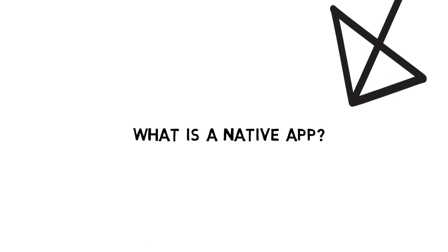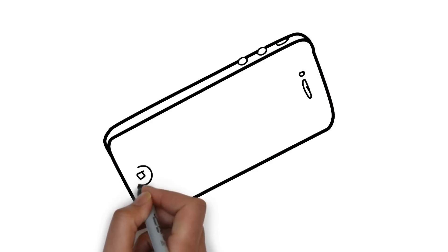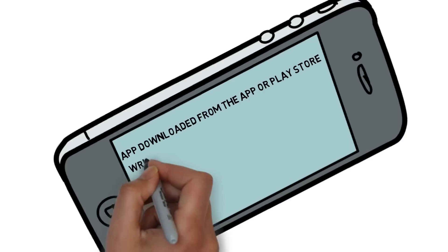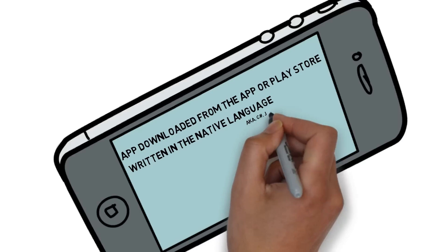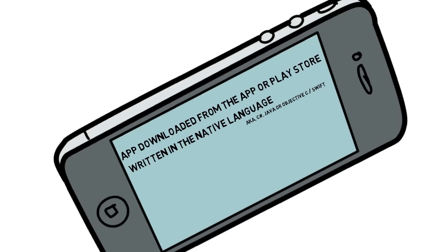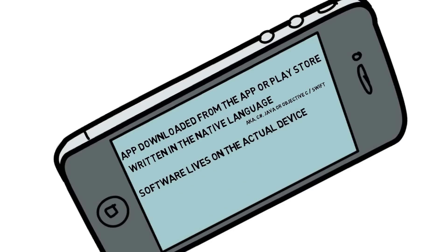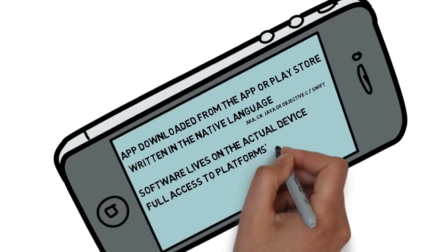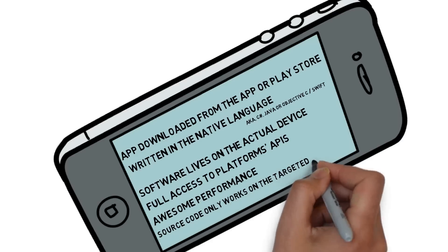So what is a native app? Native apps are downloaded from the Apple Store or the Play Store, written in the native language — C#, Java, Objective-C, or Swift. The software lives on the actual device. It has full access to the platform's APIs and awesome performance. The source code only works on the targeted platform.